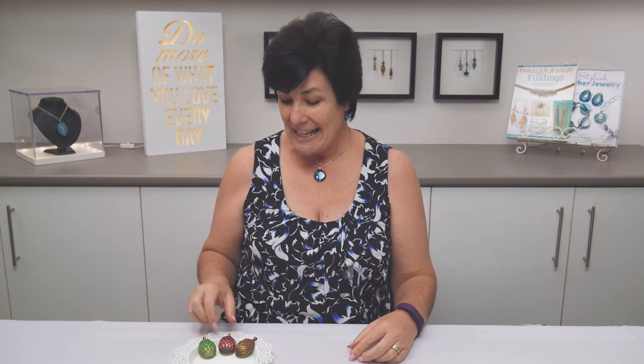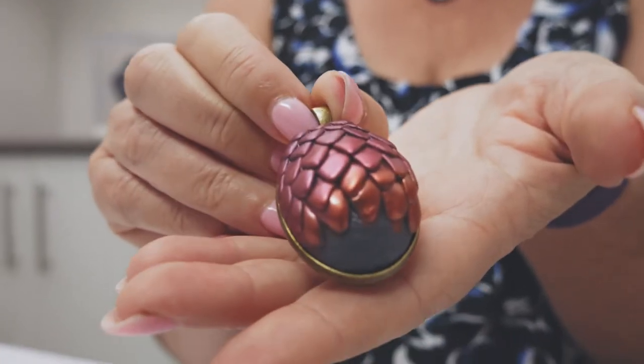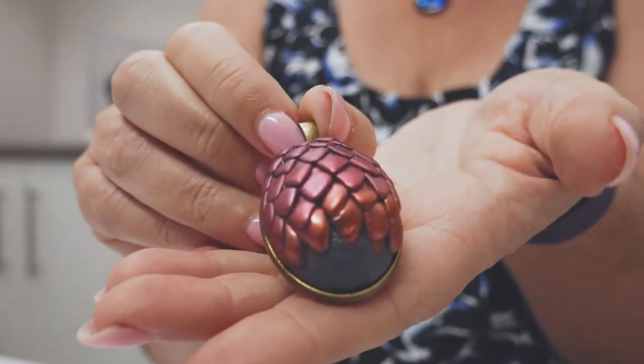Hi, I'm Mullane. Welcome to my studio. Today we'll be making a dragon's egg pendant inspired by Game of Thrones. We'll be using a quick curing resin so you can complete this project in around 20 minutes.